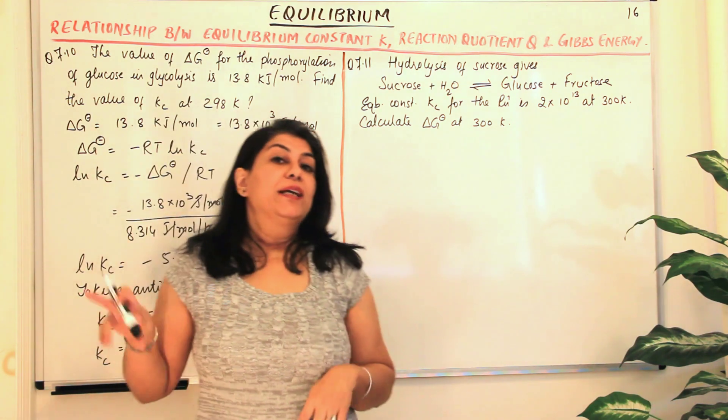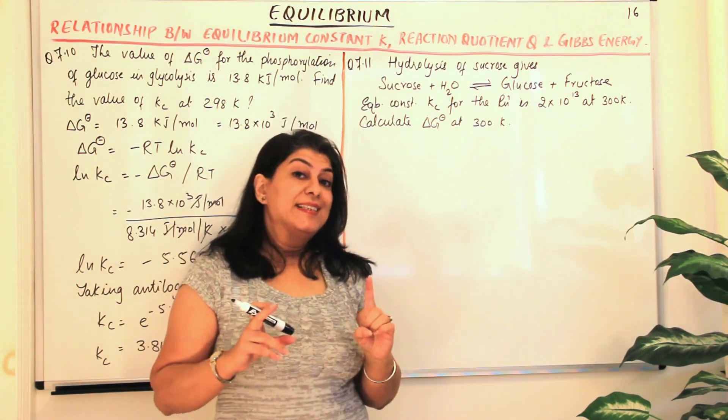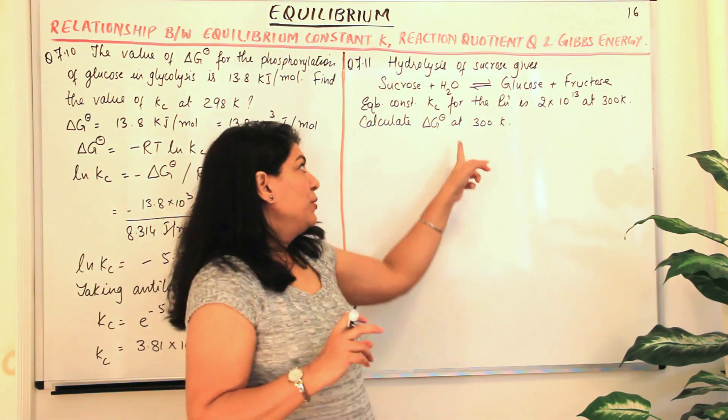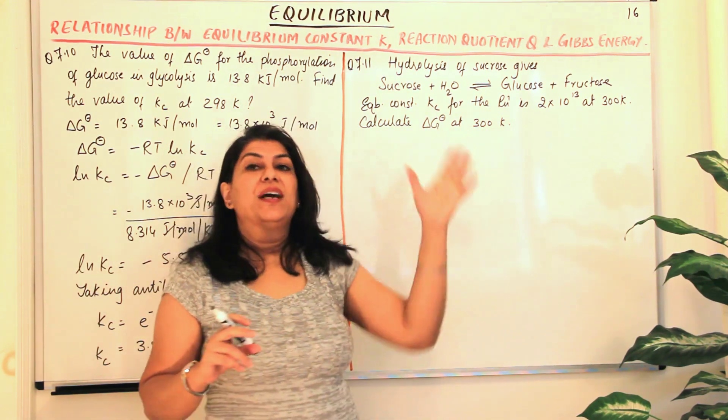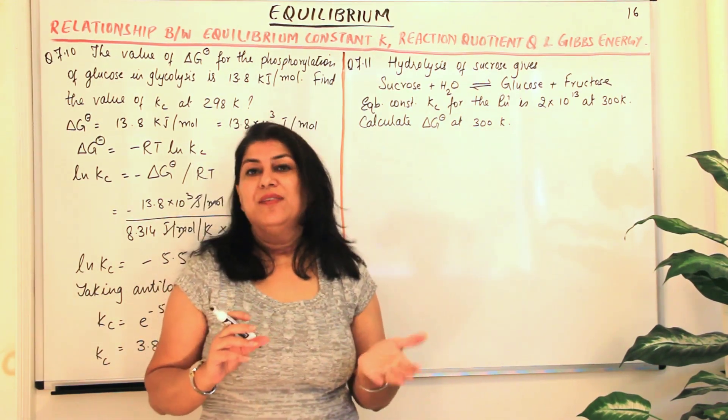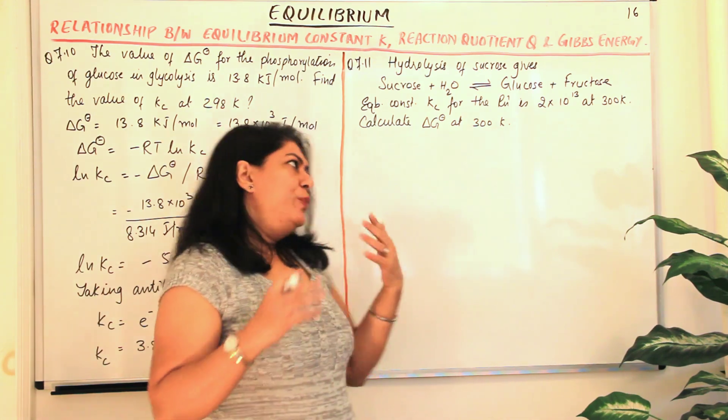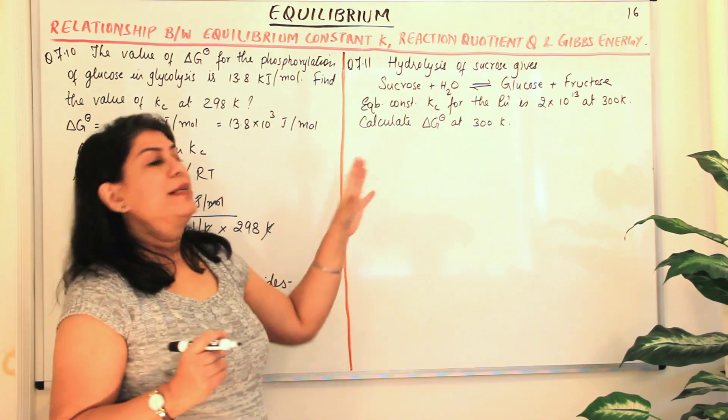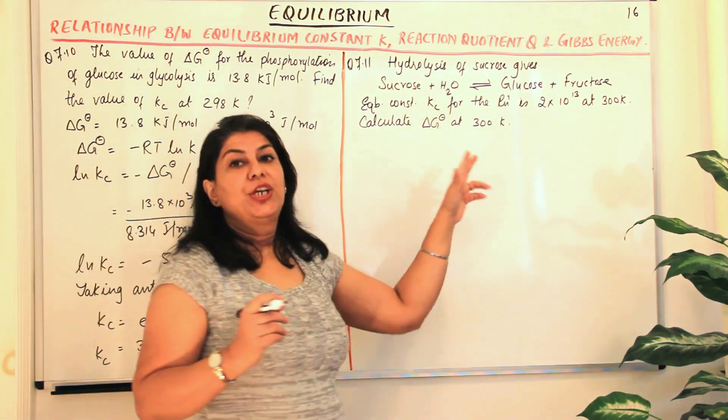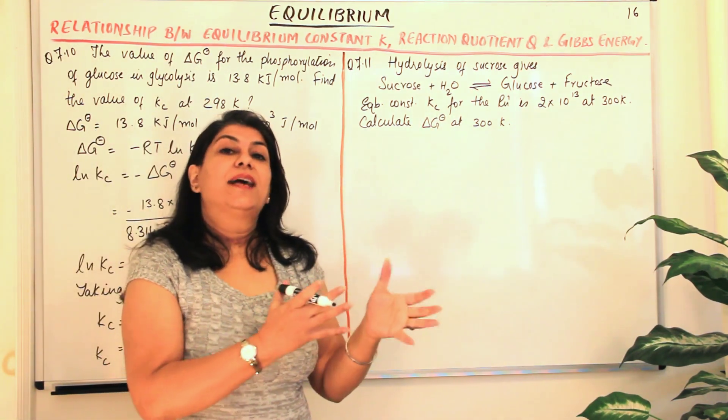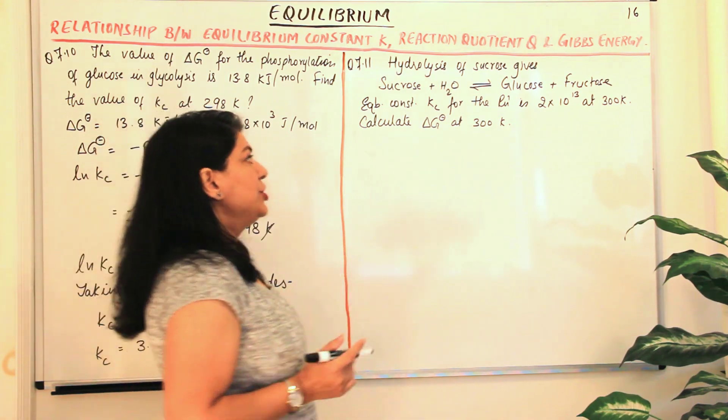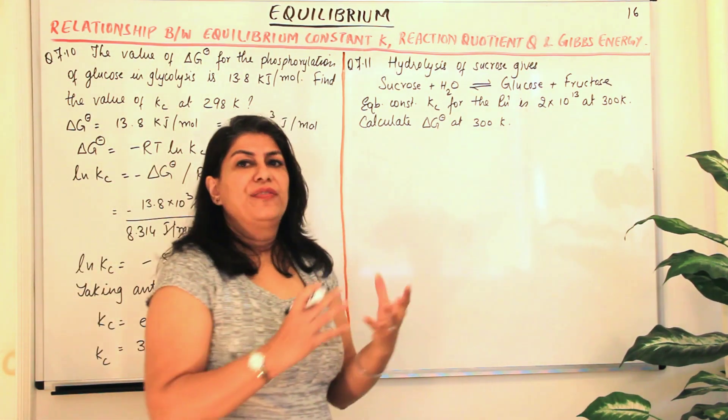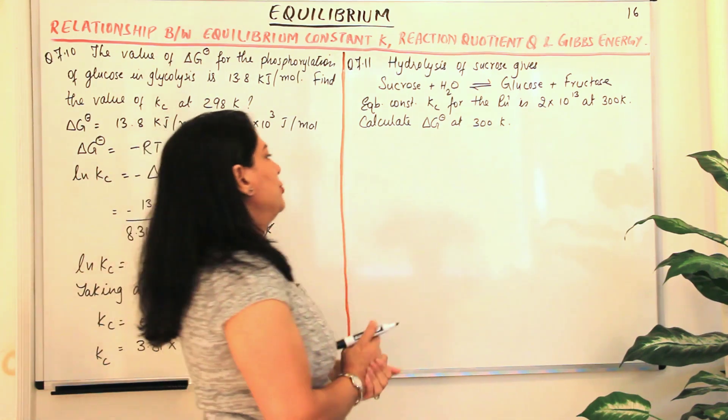Delta G naught actually should be at 298 Kelvin because the standard temperature is 298 Kelvin. But the temperature that we've been given is 300 Kelvin, which is just 2 degrees away from 298 Kelvin. So we assume that whatever data is given to us would be valid for delta G naught, which is the standard free energy change. Assuming this to be okay and ignoring the difference of just 2 degrees, we'll substitute the values.